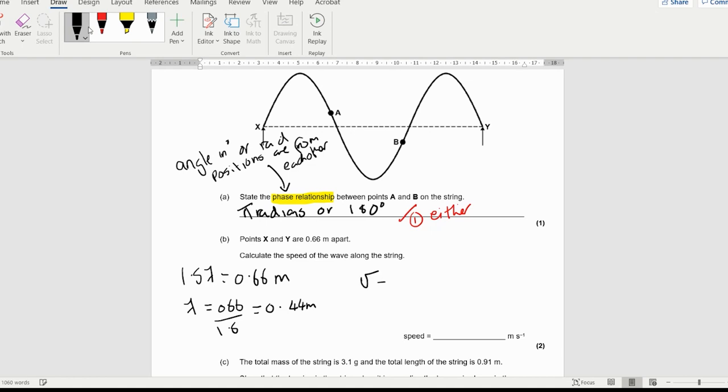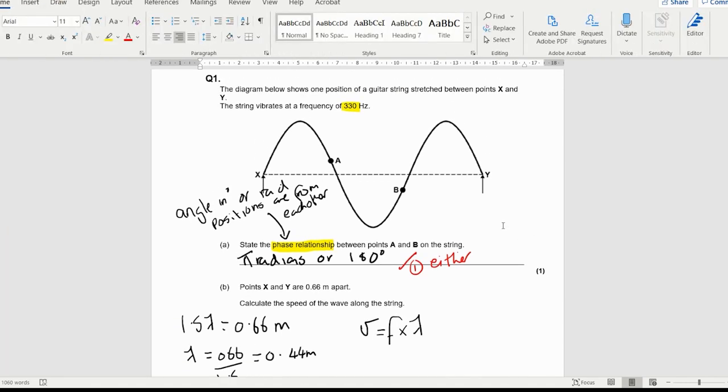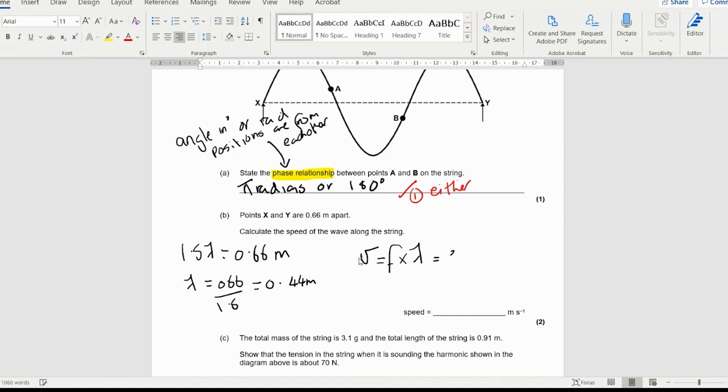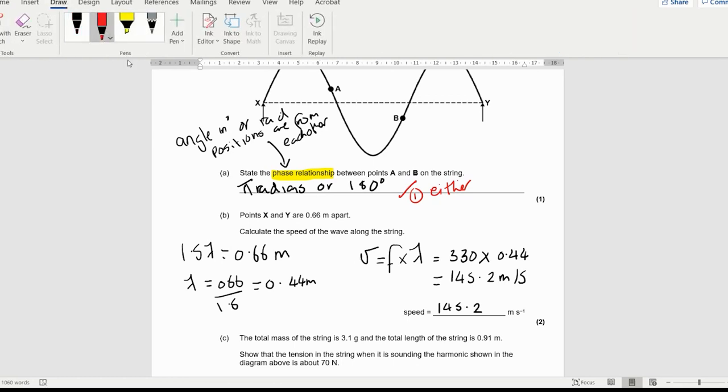The speed of a wave is the frequency times its wavelength. I know the frequency is 330 hertz because it was told to me at the beginning. So I've got 330 times by 0.44, which is 145.2 meters per second. There was one mark for working out the true wavelength and one mark for the answer of 145.2.